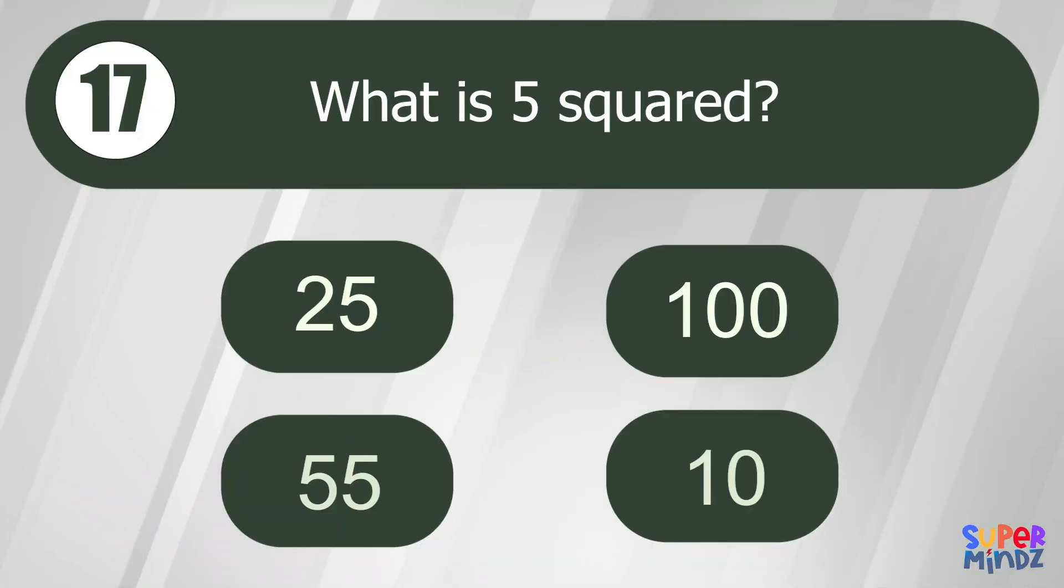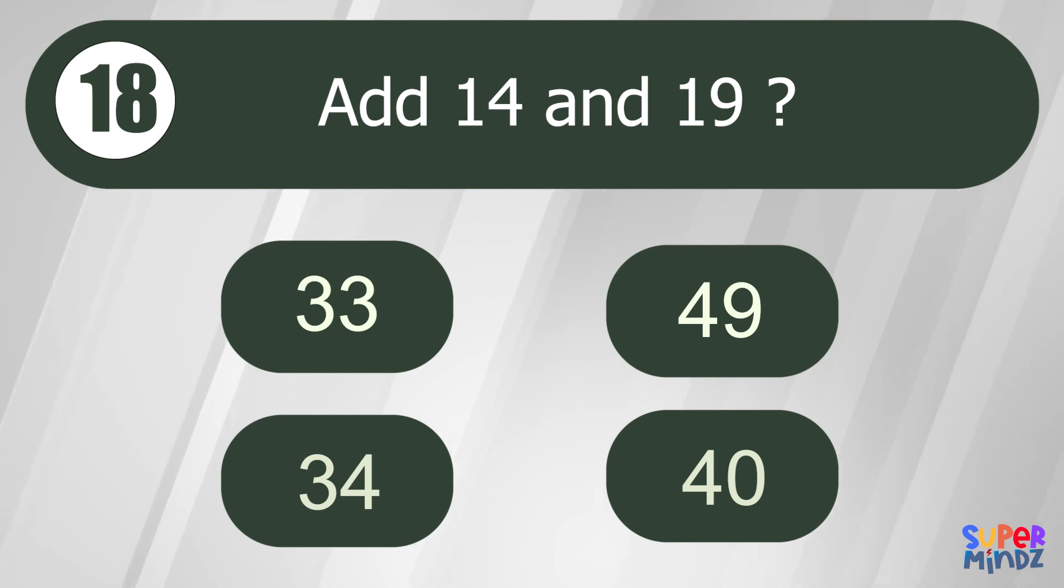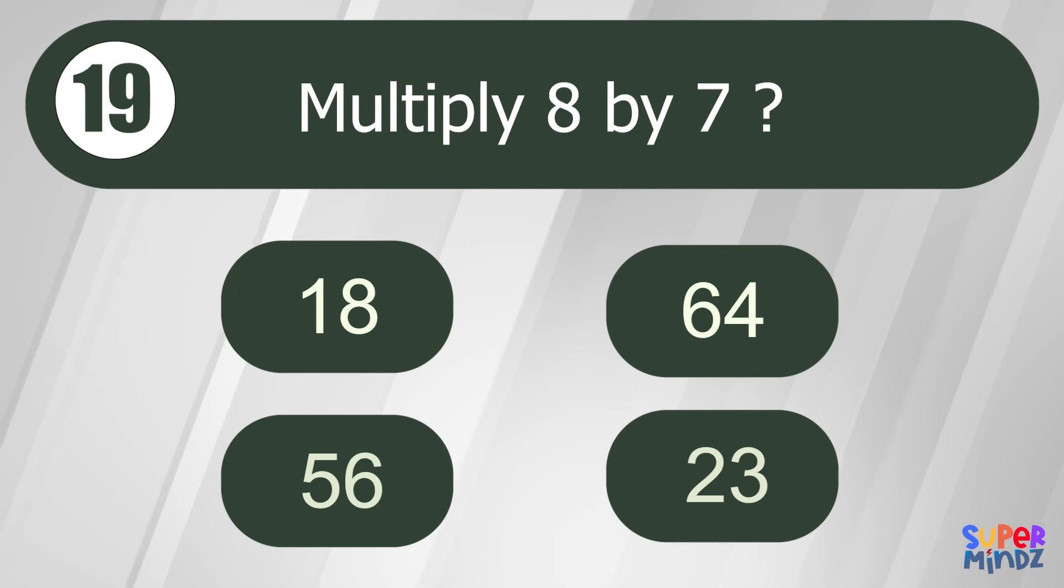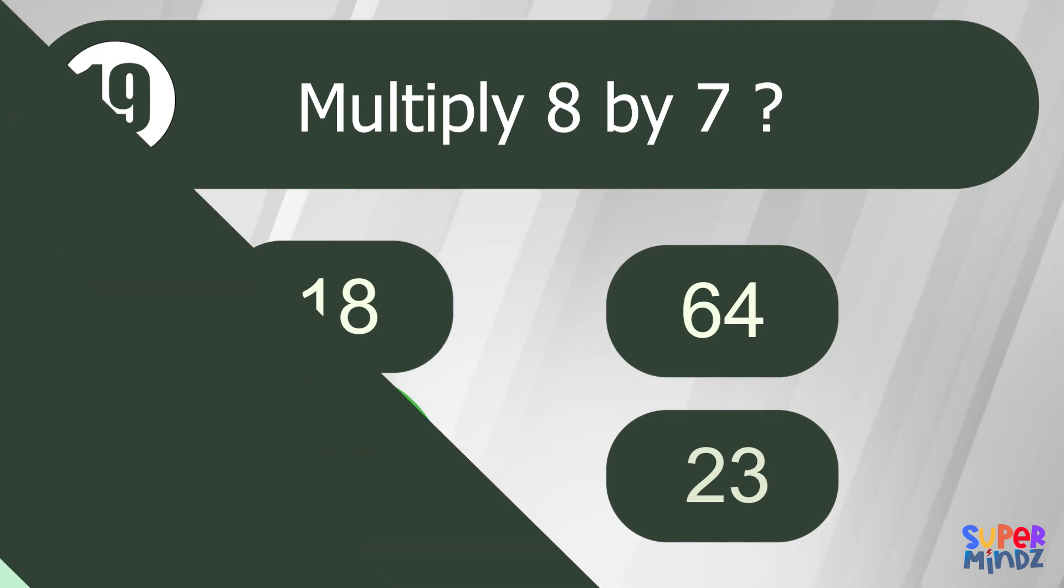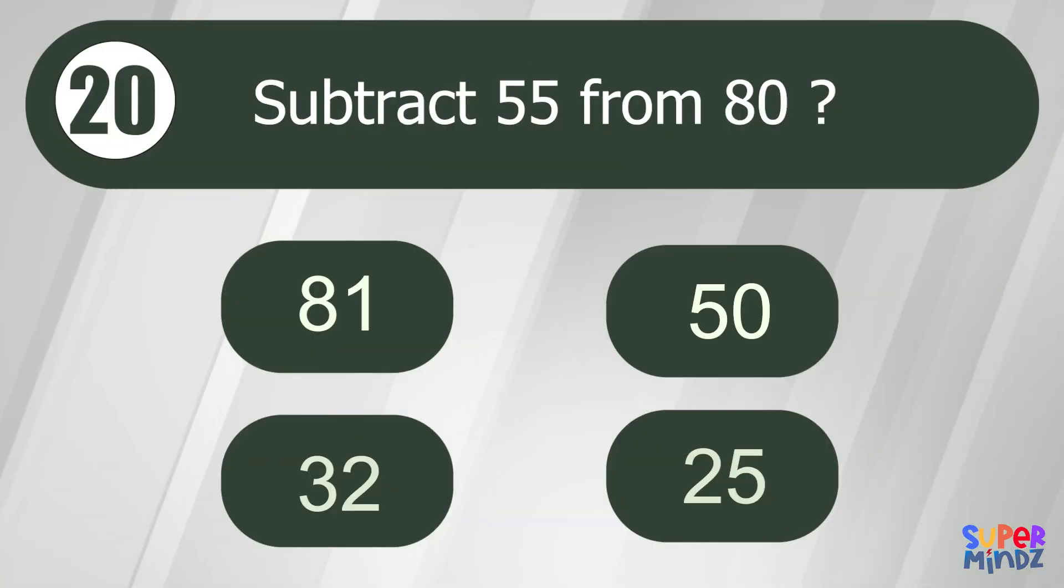What is 5 squared? 25. Add 14 and 19. 33. Multiply 8 by 7. 56. Subtract 55 from 80. 25.